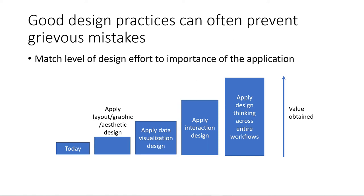For example, it's a good idea to match the level of design effort to the importance of your application. In this diagram I've tried to show how more intense forms of design yield more value — the more important your app is to your company, the further to the right you'll want to go. The term design is overloaded and means different things to different people. The first level most teams take up is primarily around layout and aesthetics — choosing the right colors and such. The value you get from aesthetics is limited: nobody wants to look at an ugly app and good layout helps users work faster, but you can typically get more value by doing more intense design, such as doing data visualizations.